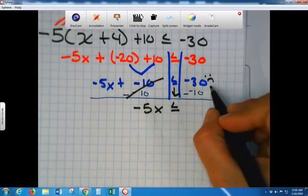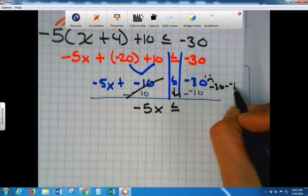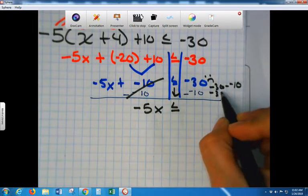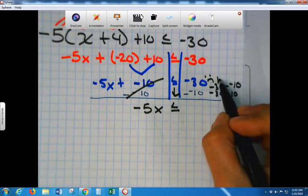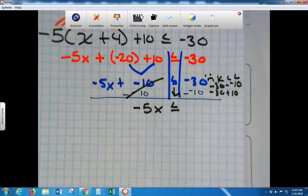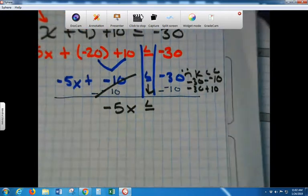So, negative 30 minus negative 10 is what? Negative 30 plus, keep, change, change. Don't forget to change that second number. So let me zoom it in so you see it right there.